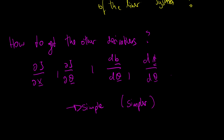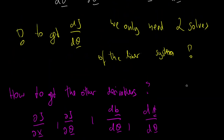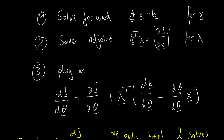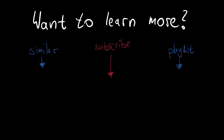With this, I've hopefully answered how to get all the ingredients for the adjoint method. If anything is still unclear, please write a comment — I'd be happy to help. If you enjoyed the video, consider liking and subscribing. I hope to see you next time.